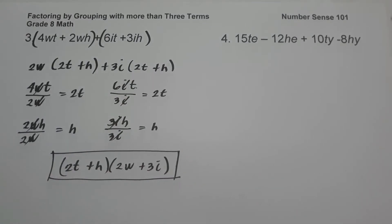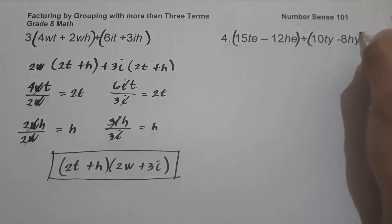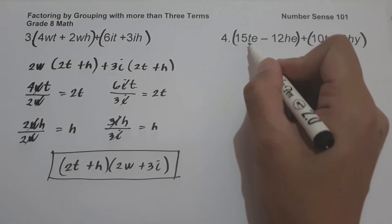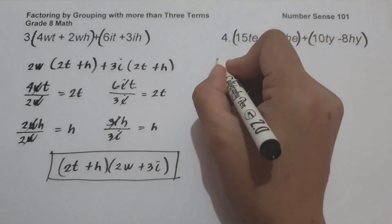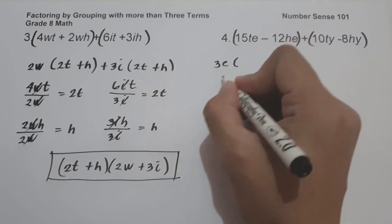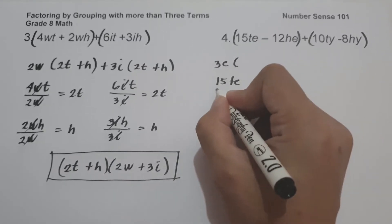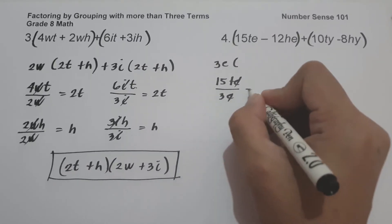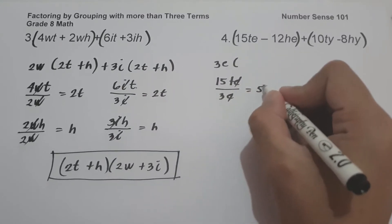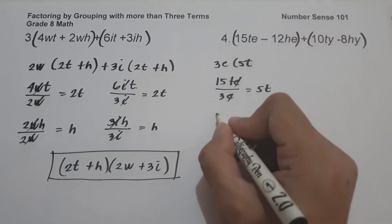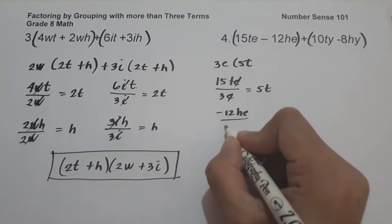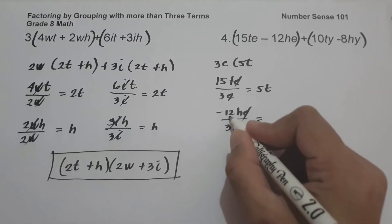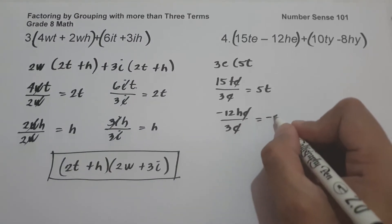On number 4, we have 15TE minus 12HE plus 10TY minus 8HY. Let us factor by grouping. The greatest common factor of 15TE and negative 12HE is 3E. So 15TE divided by 3E: cancel E, 15T divided by 3 gives 5T. Then negative 12HE divided by 3E: cancel E, giving negative 4H.